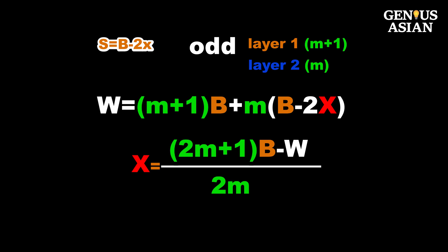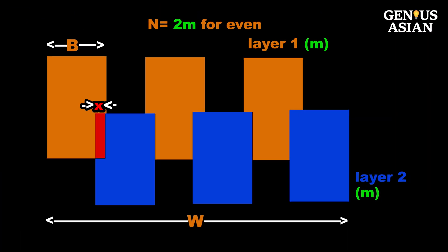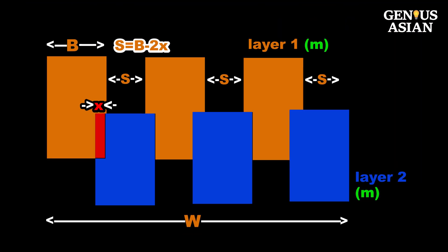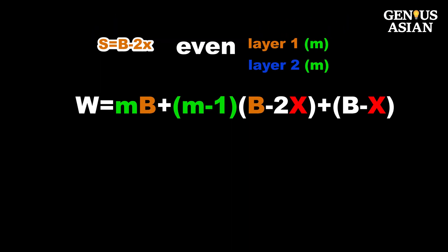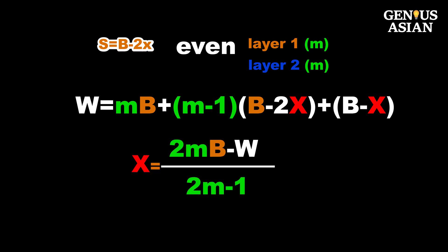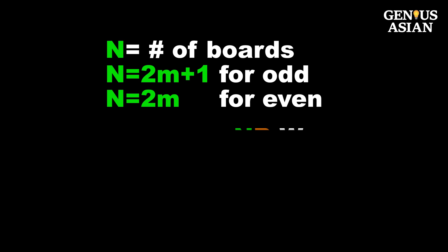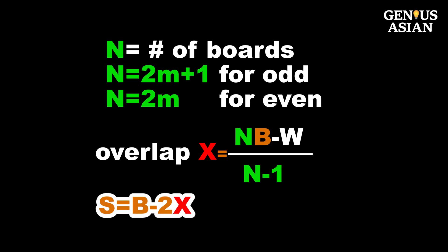Rearranging the equation, we arrive at the final formula for the overlap amount x, applicable for both odd (n = 2m + 1) and even (n = 2m) numbers of boards.